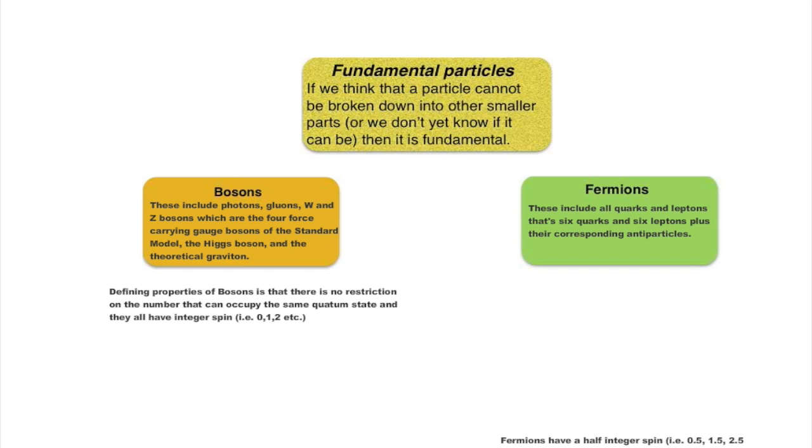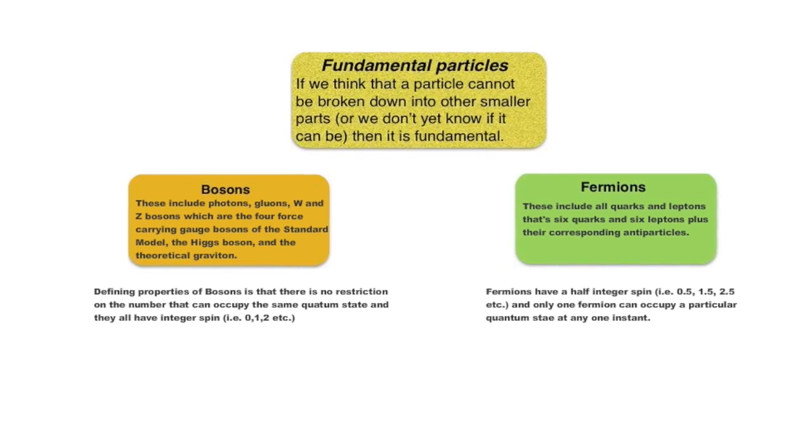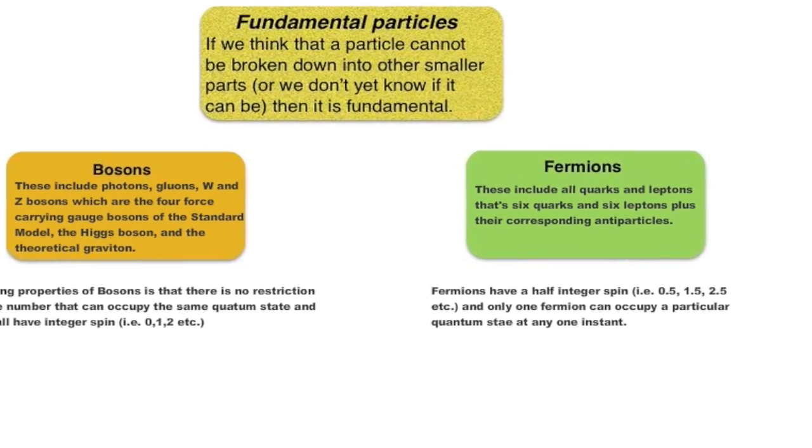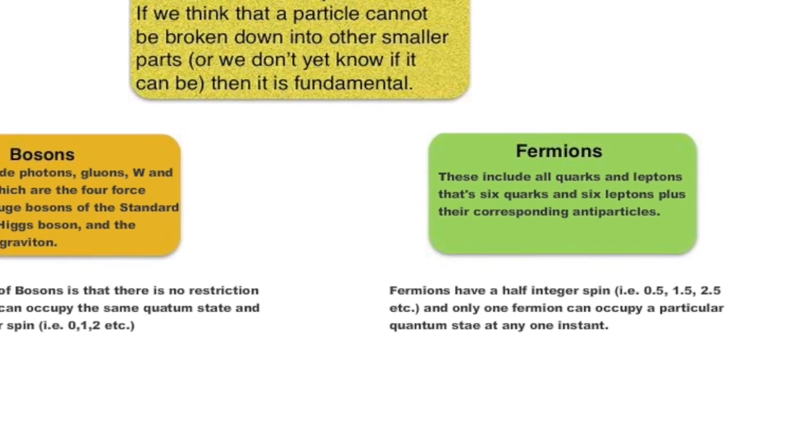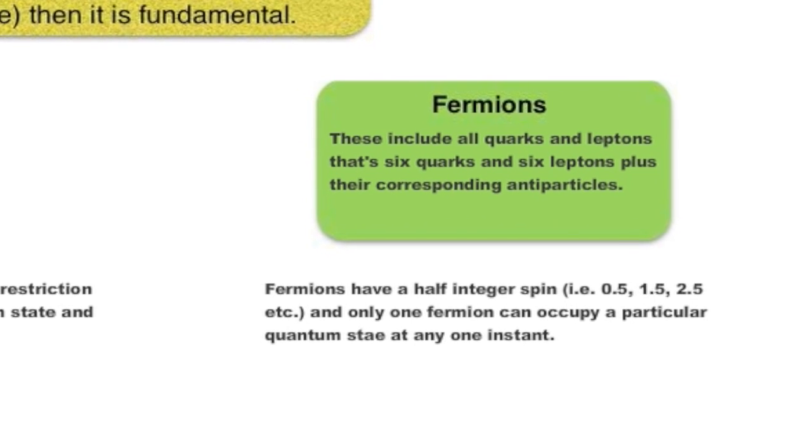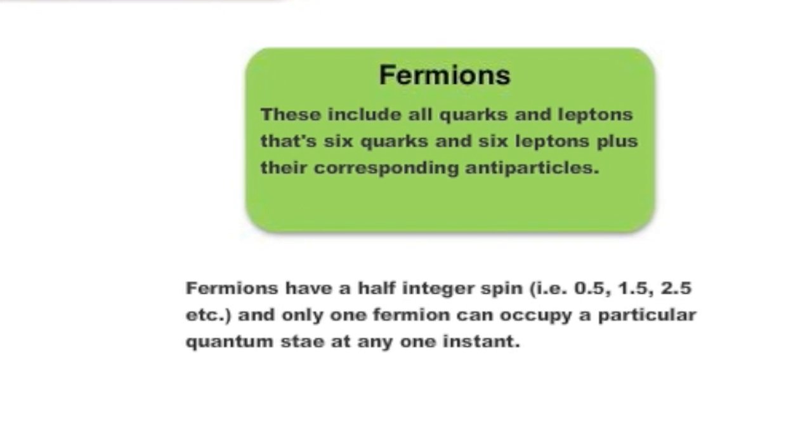All fermions have half integer spin, that is 0.5, 1.5, 2.5 and so on. In addition, only one fermion can occupy a particular quantum state at any given time. If there's more than one in the same space, then at least one property of each fermion, such as its spin, has to be different.